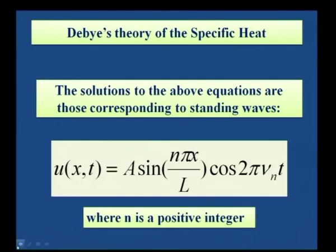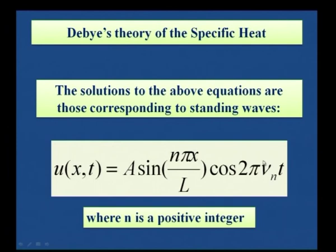The displacement u measured at a given point x at time t — the solution of the wave equation — will be: u = A·sin(nπx/L)·cos(2π·ν_n·t), where ν_n is the frequency of the wave propagating through the one-dimensional string, t is the time, A is the amplitude, and n is a positive integer.